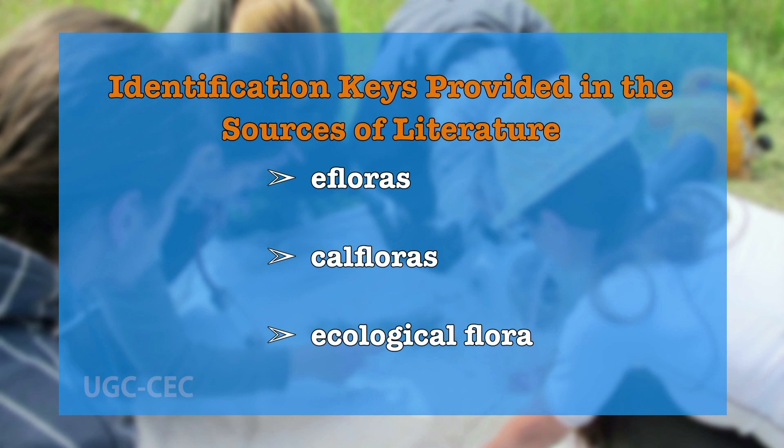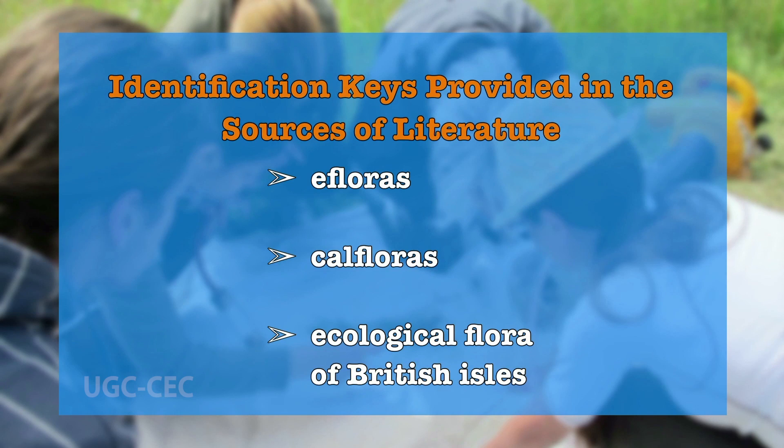Identification will be authenticated by using various types of taxonomic literature such as floras, monographs, or manuals. The identification keys provided in sources of literature such as e-flora, Cal-flora, and the Ecological Flora of the British Isles will also help in correct identification.